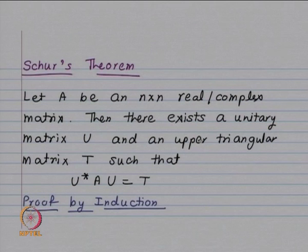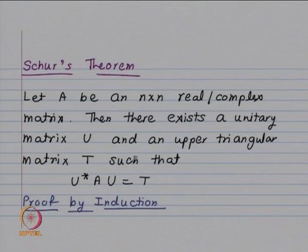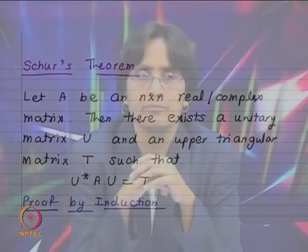The question is whether all matrices can be reduced to upper triangular form by similarity, and the answer is yes — that is Schur's theorem. Suppose A is an n×n real or complex matrix; then there exists a unitary matrix U and an upper triangular matrix T such that U*AU = T. A and T have the same eigenvalues.